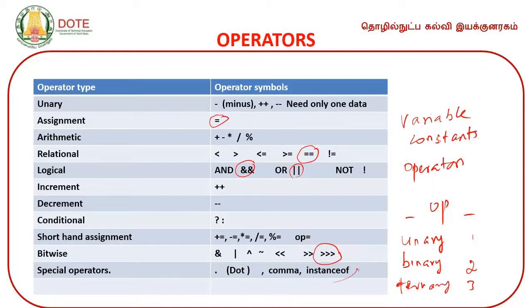Another operator is the instanceof operator. In Java there is no sizeof operator like in C language. In C language, sizeof operator is used to find the size of data. In Java, instead of sizeof, the length property is used. And instanceof is another special operation.